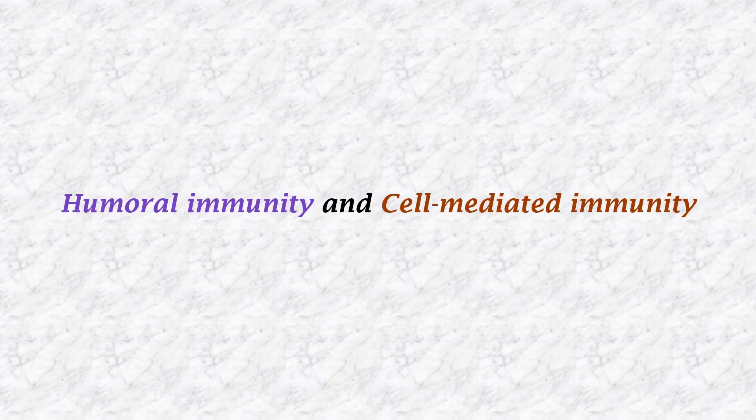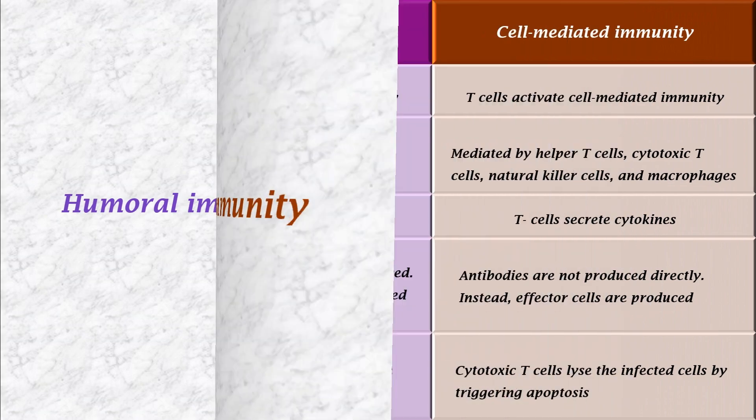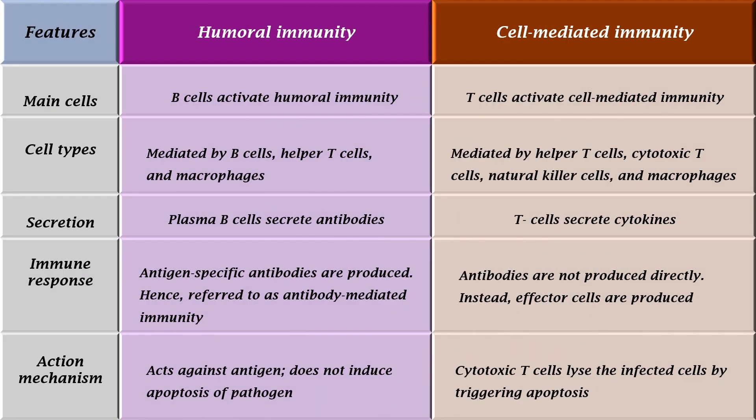Humoral immunity and cell-mediated immunity. B-cells are the main cells that activate humoral immunity; other cell types include helper T-cells and macrophages. In contrast, T-cells activate cell-mediated immunity; other cell types include helper T-cells, cytotoxic T-cells, natural killer cells, and macrophages. Plasma B-cells produce antigen-specific antibodies in humoral immunity, and hence it is called antibody-mediated immunity. In cell-mediated immunity, T-cells secrete cytokines and effector cells are produced.